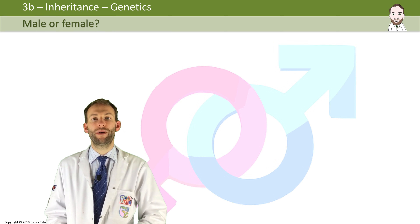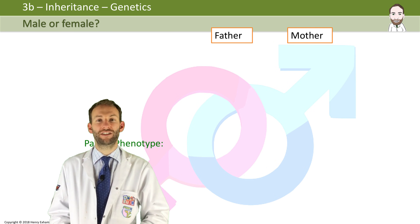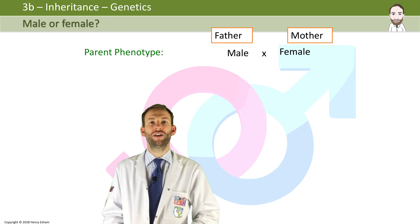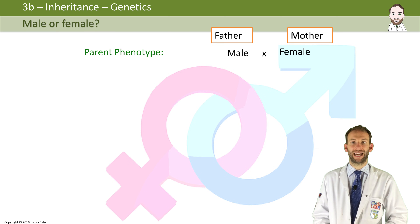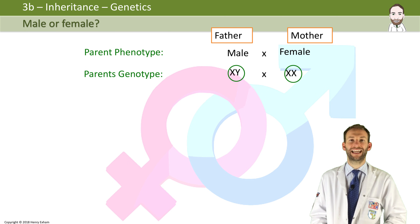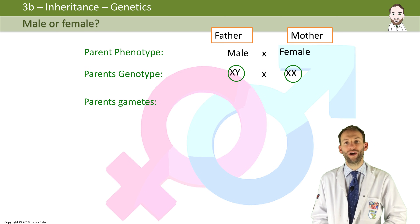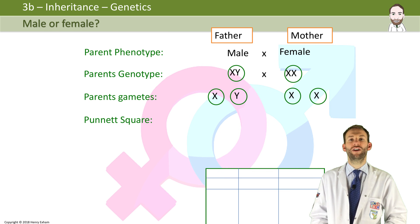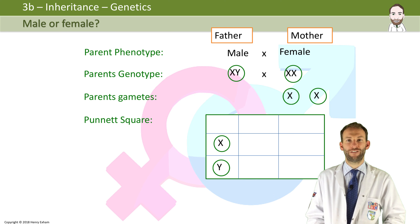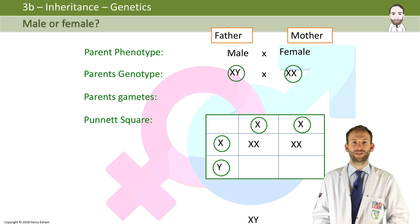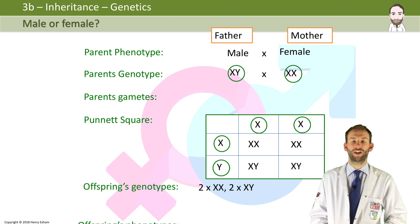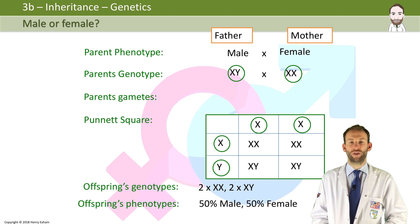So again, we set out our Punnett square in the same way. We put the phenotype — in this case male and female — and then we show the genotypes X and Y, and X and X. The sperm could be an X sperm or a Y sperm, and the mother can only pass on X in her eggs. We put them into the Punnett square and we show that we get a 50/50 result — two girls and two boys.